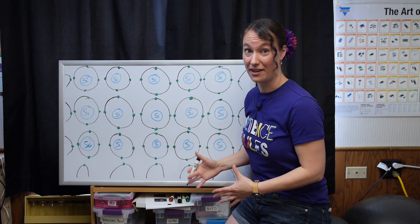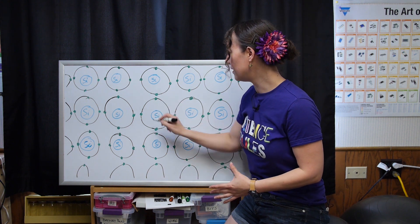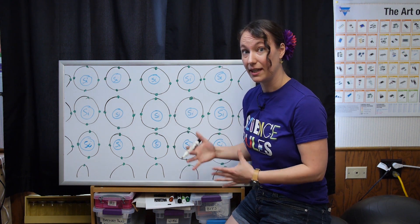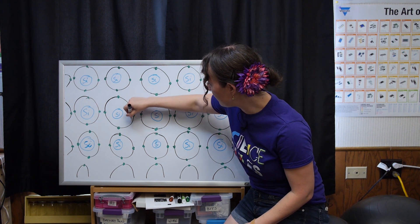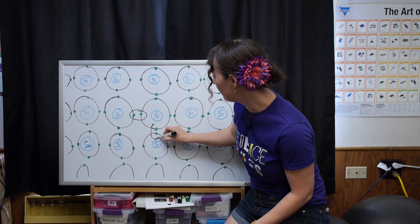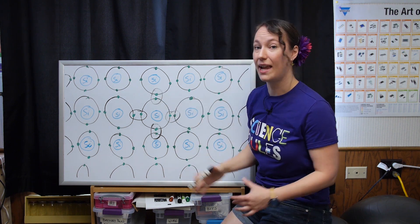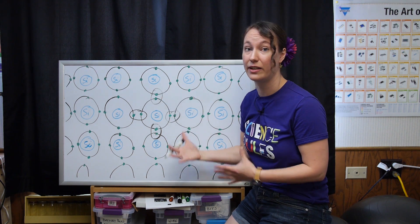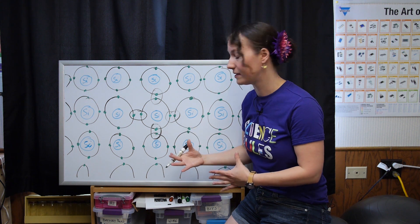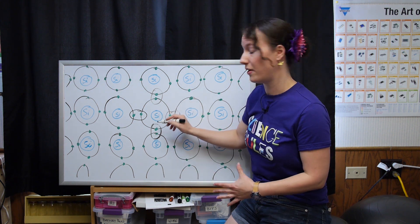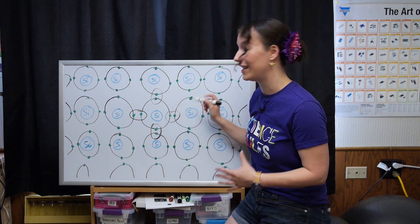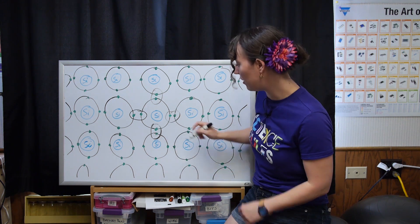Here we have a bunch of silicon atoms. Each has four electrons in its outer valence shell. Each of these electrons will bond with an electron from another silicon atom. These electrons become shared and add to the total of the outer valence shell of both atoms. So, this silicon atom now has one, two, three, four, five, six, seven, eight electrons in its outer valence shell.